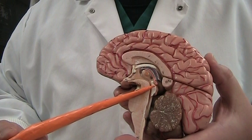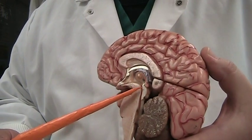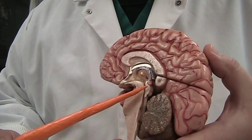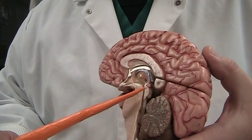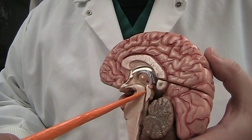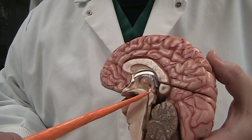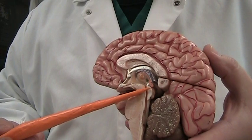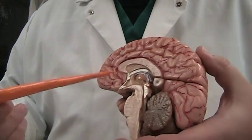This posterior area, this is your corpora quadrigemina. It has basically on both sides four nodules, body of four, and they're twins, like superior and inferior. Superior being your superior colliculi, this is your visual reflexing.